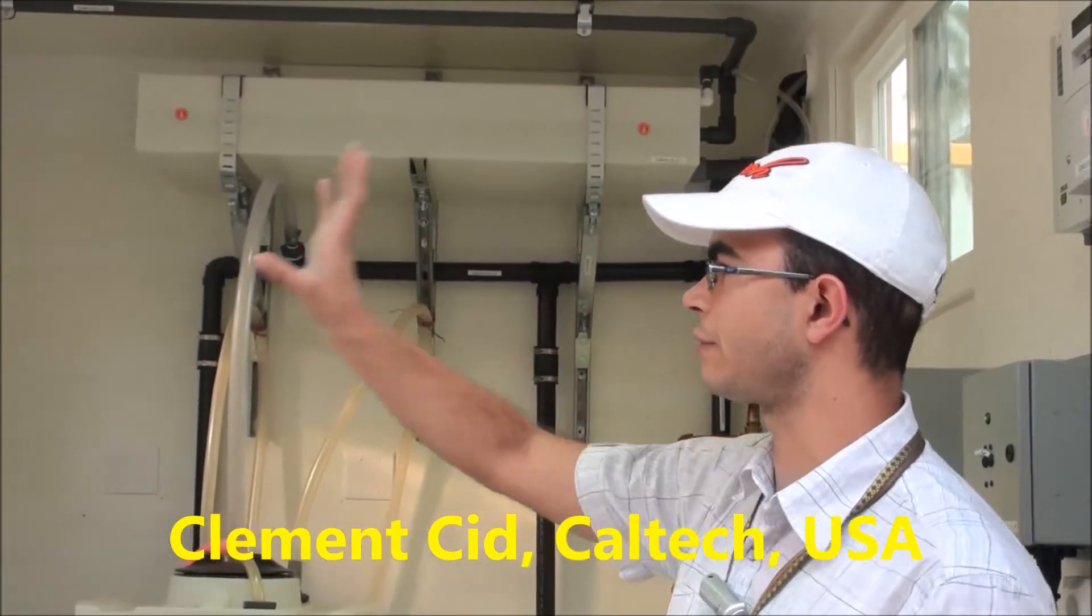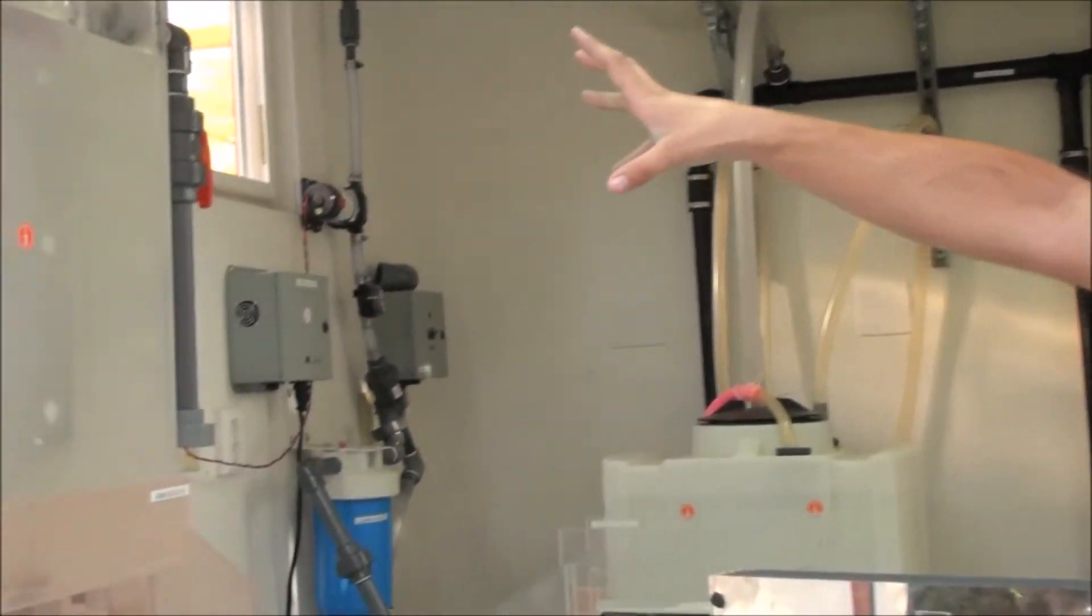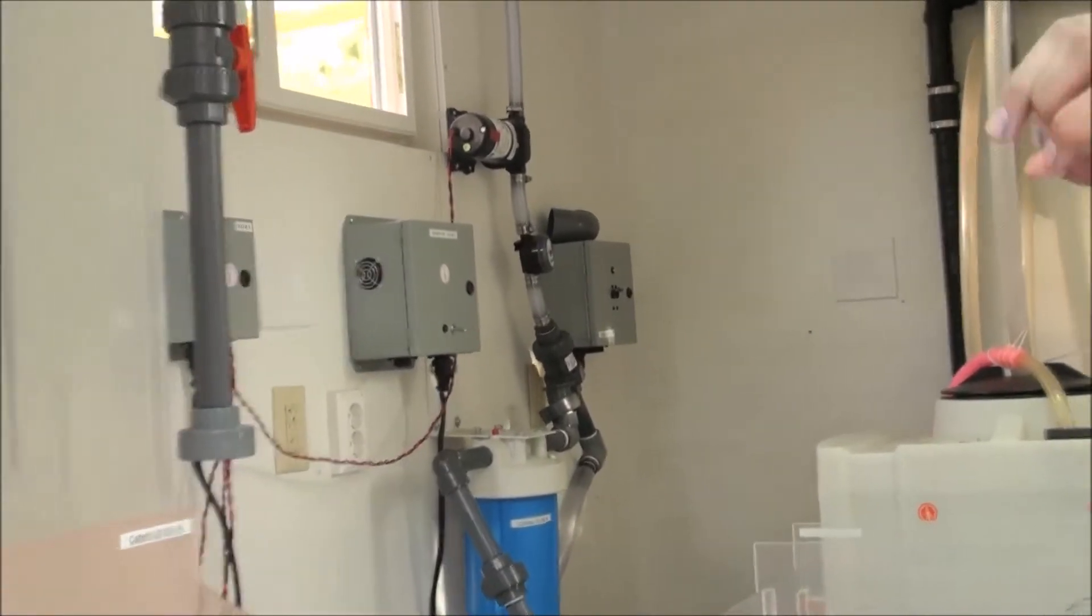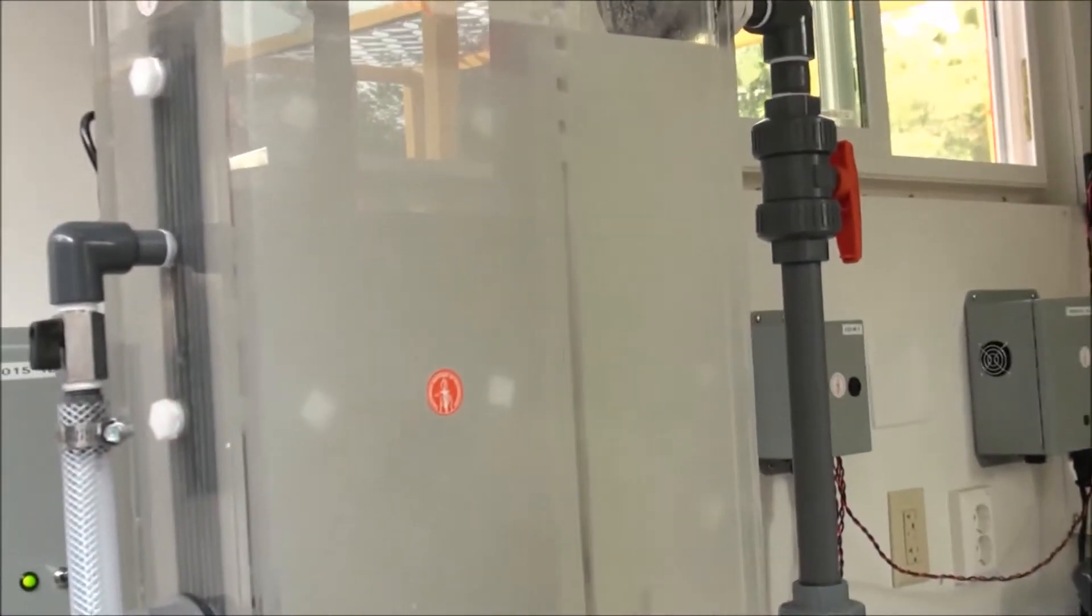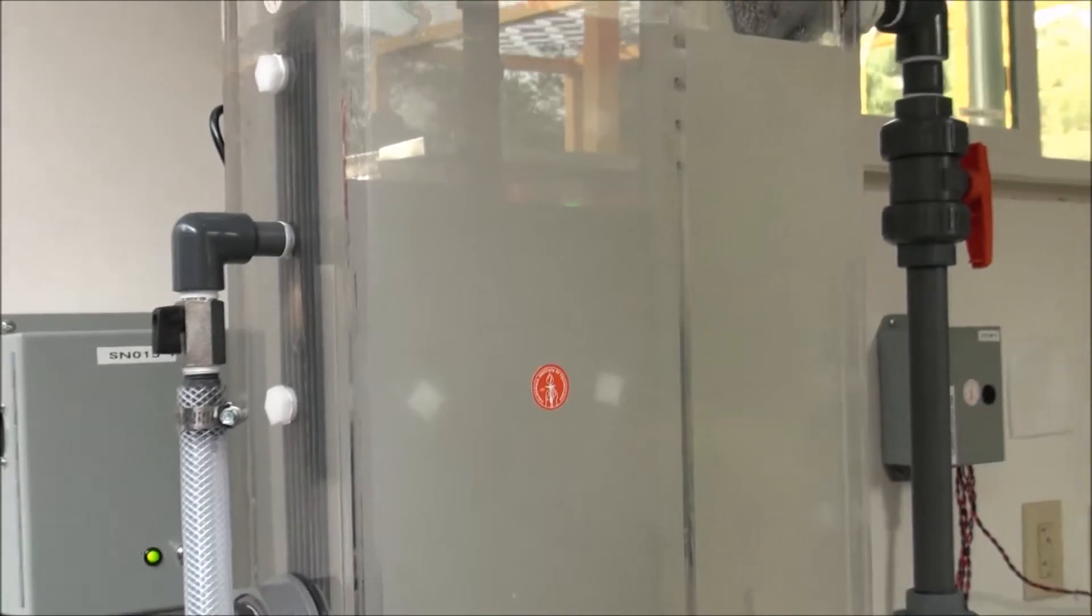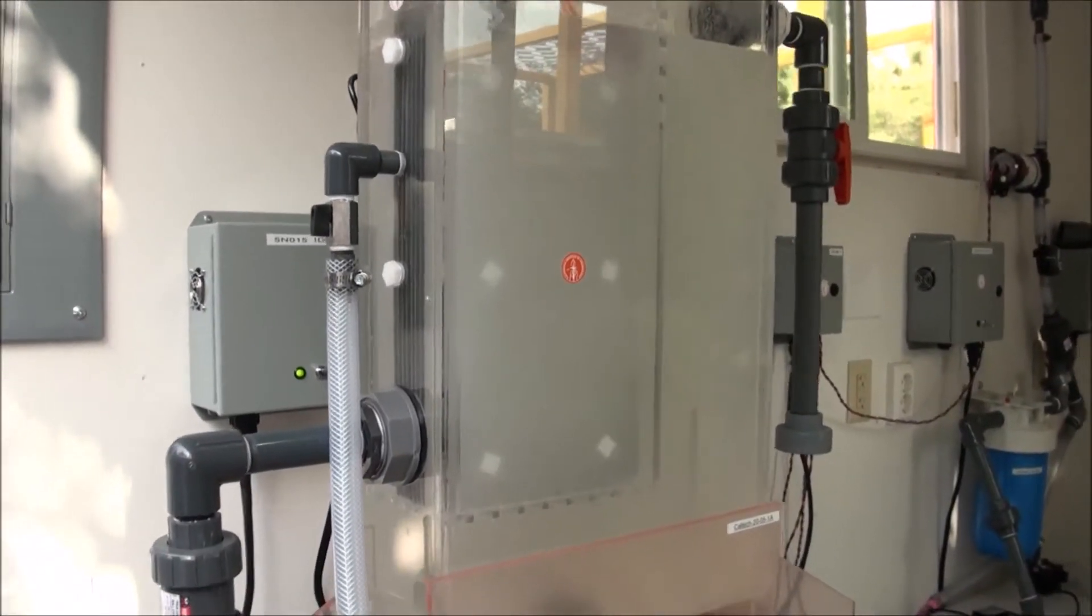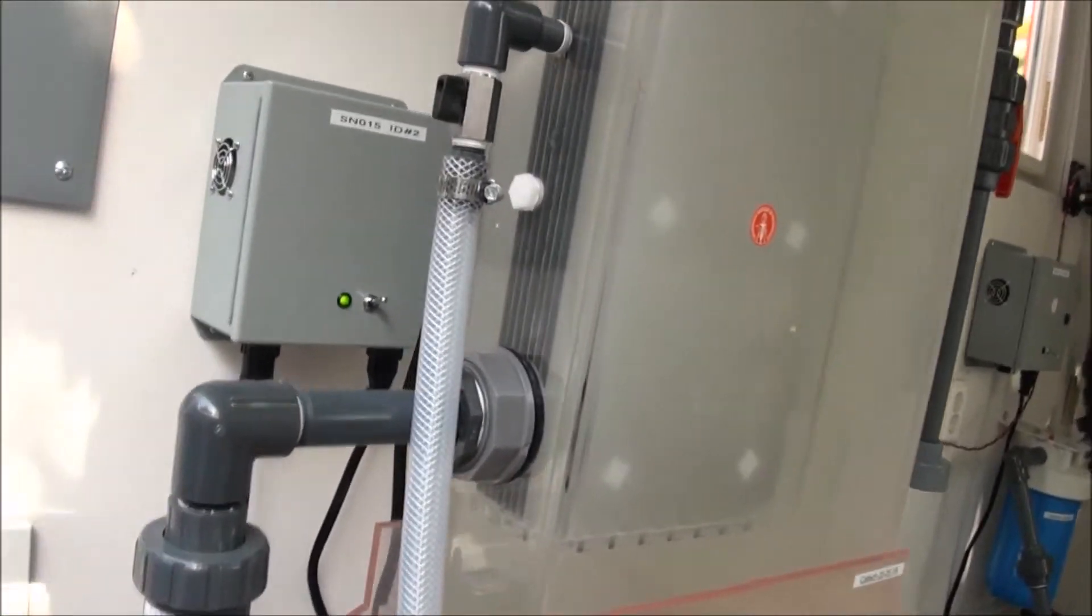We have here one of our electrochemical reactors. In the unit for field testing there are two electrochemical reactors, so a total treatment capacity of 80 meters per batch, and the batch is about 3 hours.